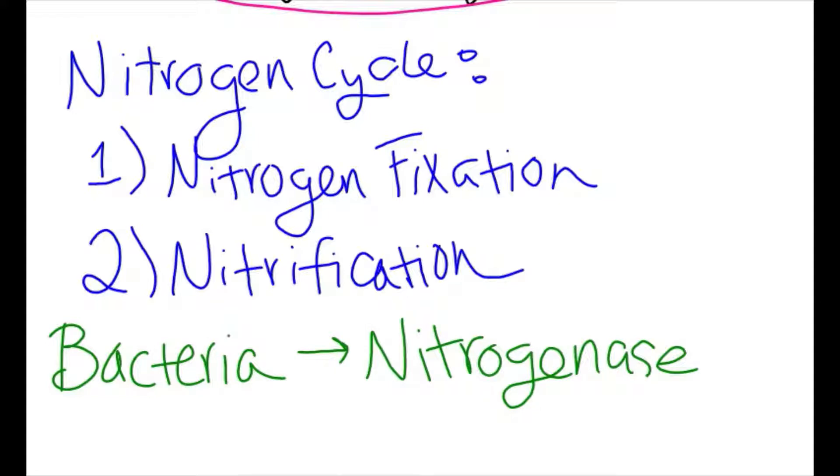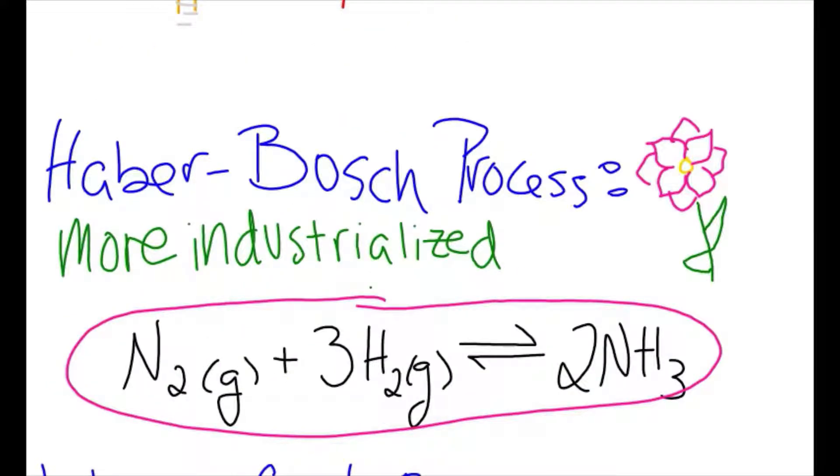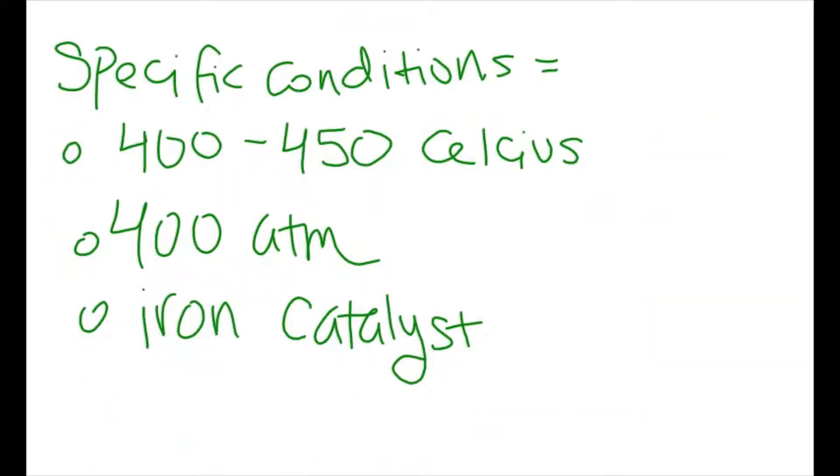While Mother Nature uses bacteria and enzymes like nitrogenase, the Haber-Bosch process requires specific conditions: 400 to 450 degrees Celsius, 400 atmospheres of pressure, and an iron catalyst. Why such conditions?